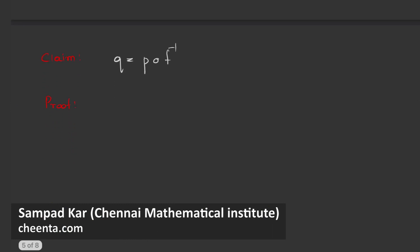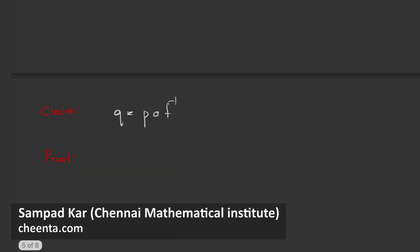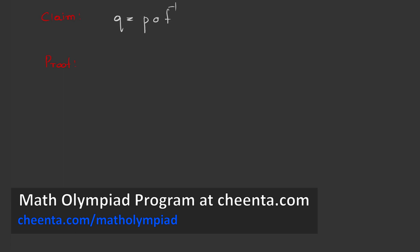Now I am going to make a claim. The claim is that the required polynomial is actually p composed with f inverse. Remember we had a function f which we said is invertible in a certain domain of complex numbers which has all the roots in its domain, and we are saying that q, which is the required transformation of p, is actually p composed with f inverse. So let's prove this. This isn't very hard to prove.